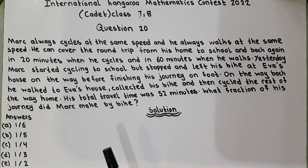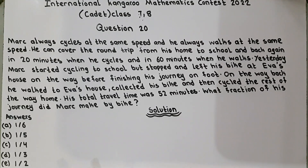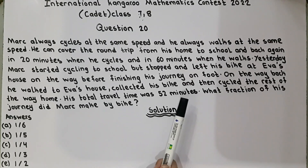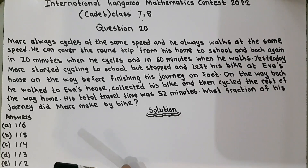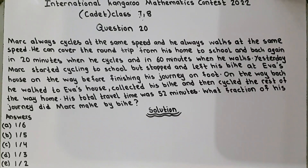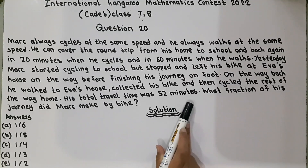When he walks, it takes him 60 minutes. But yesterday, Mark started cycling to school from his house but stopped and left his bike at Ava's house and finished his journey on foot. On the way back, he walked to Ava's house again, collected his bike and then cycled the rest of the way home. His total travel time was 52 minutes. So they are asking: what fraction of his journey did Mark make by bike? Total travel time was 52 minutes.